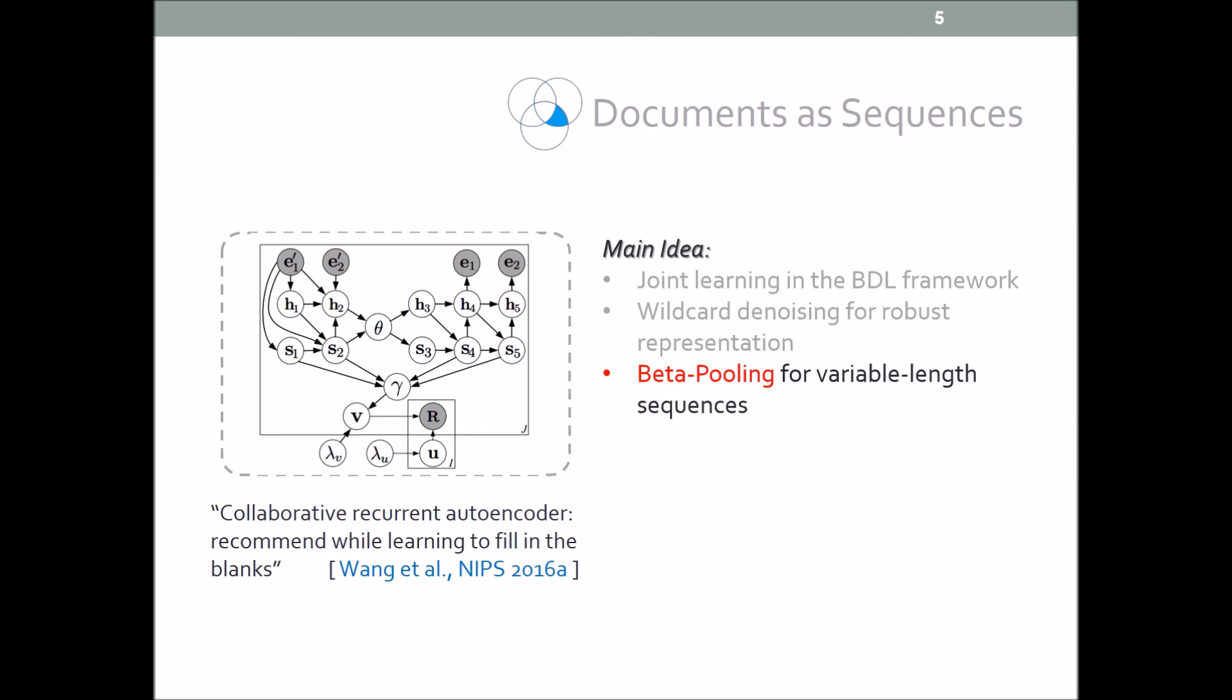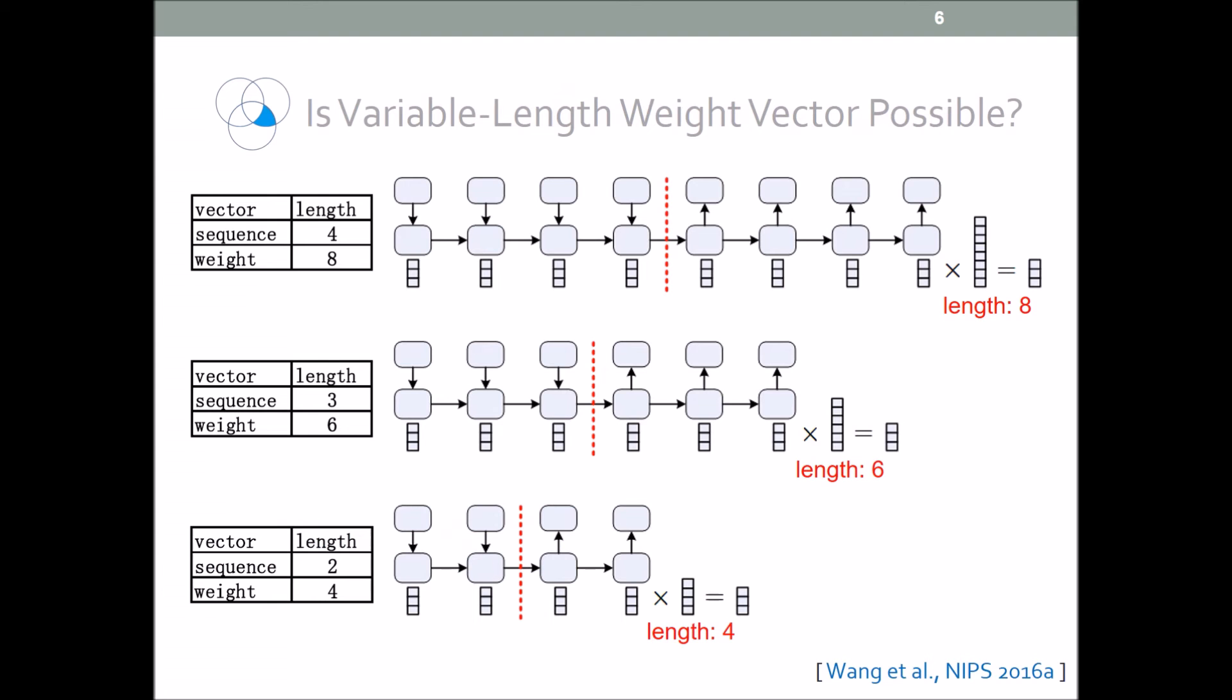Besides wildcard denoising, we propose to use beta pooling for variable length sequences. For example, if a sequence has length 4, since we're using autoencoders, we need to pool 8 vectors into 1. Hence, we need a weight vector of length 8 to compute the weighted average.